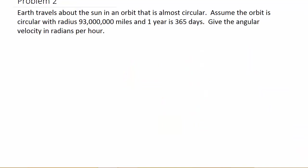It says Earth travels about the sun in an orbit that is almost circular. Assume the orbit is circular with a radius 93 million miles and one year is 365 days. Give the angular velocity in radians per hour.